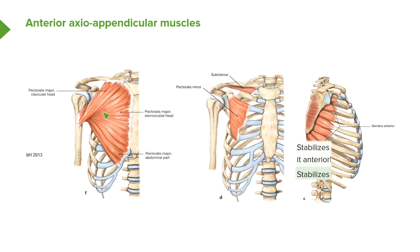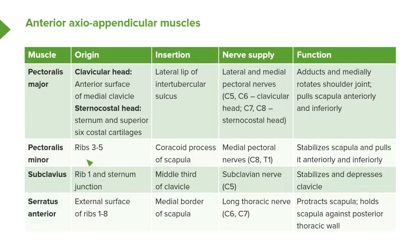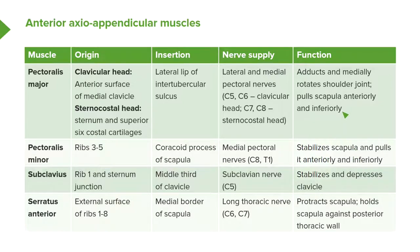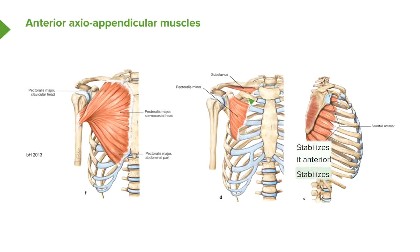Pectoralis minor comes from ribs three to five, passing towards the coracoid process of the scapula. It is innervated via the medial pectoral nerve from spinal cord segments C8 and T1. Pectoralis minor is important in stabilizing the scapula — it holds the scapula against the posterior chest wall and also pulls it anteriorly and inferiorly, a similar function to pectoralis major.